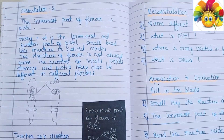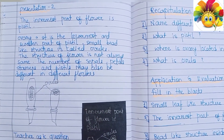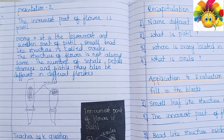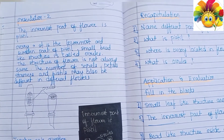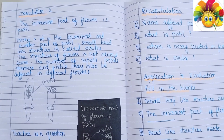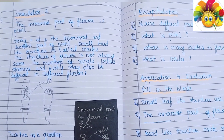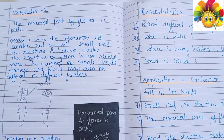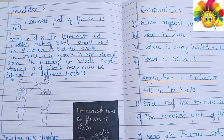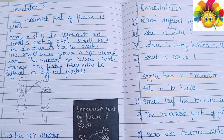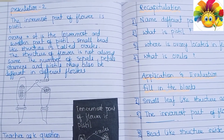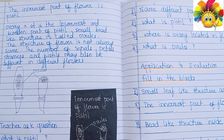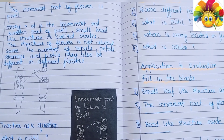The second presentation means we have to repeat the same process again — we have to explain about the innermost part of the flower. You can see here we can draw a diagram on the blackboard as well, and we have to present our topic very nicely to students.